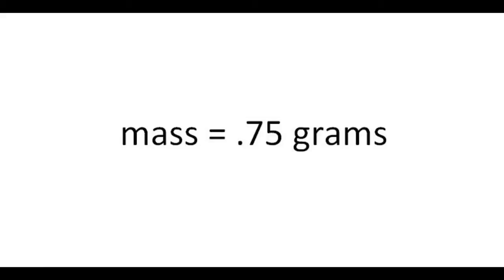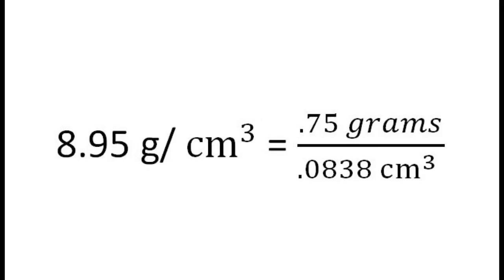The other thing I had to find was the mass, which I used a scale for — it ended up being about 0.75 grams. Taking the 0.75 grams mass over the 0.0838 centimeters cubed volume, we get a density of 8.95 grams per cubic centimeter. This is right around the density of copper, so this wire is copper.